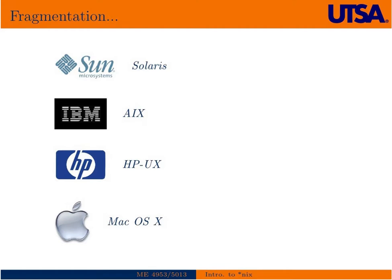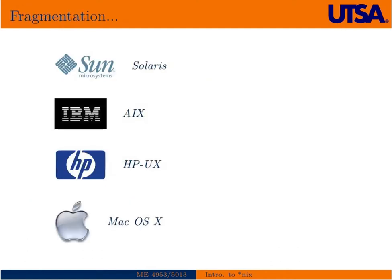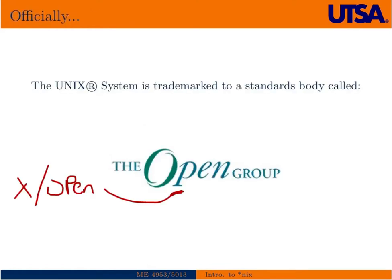This fragmentation caused some problems. Eventually, Novell bought AT&T's Unix software development business and released the trademark for Unix to an open standards body called XOPEN, which then merged with the Open Group. The Open Group consists of many companies, including Oracle (formerly Sun), IBM, and HP, and it is essentially a standards body that tries to control the Unix system.